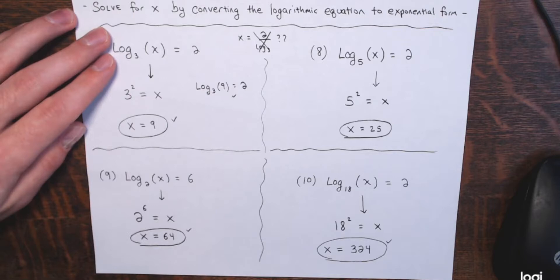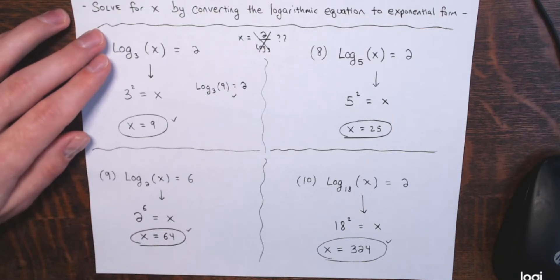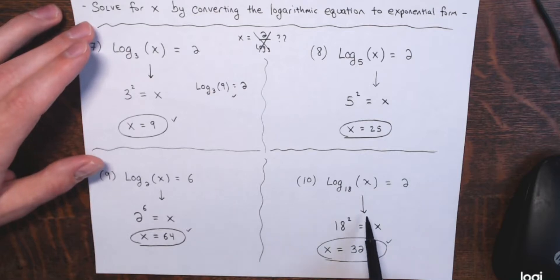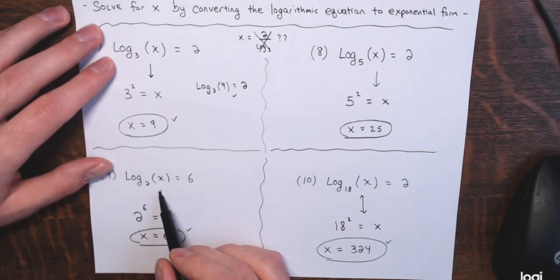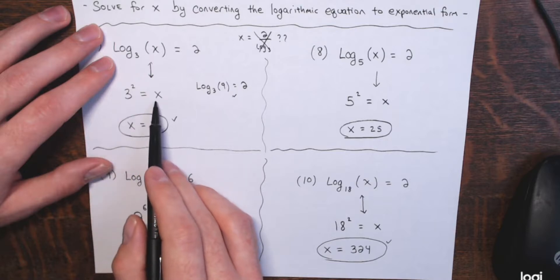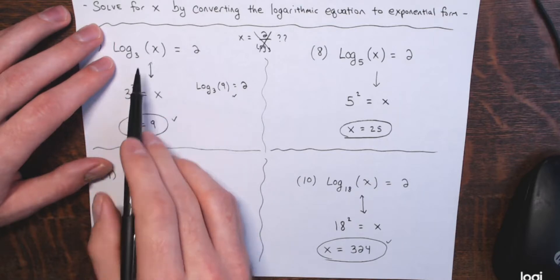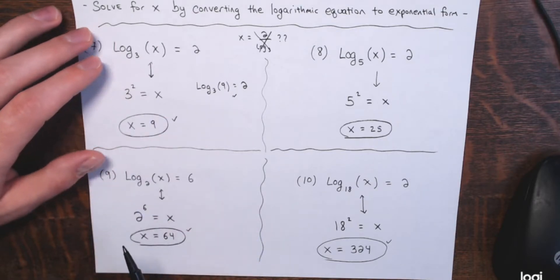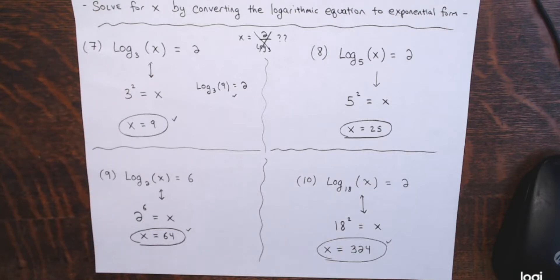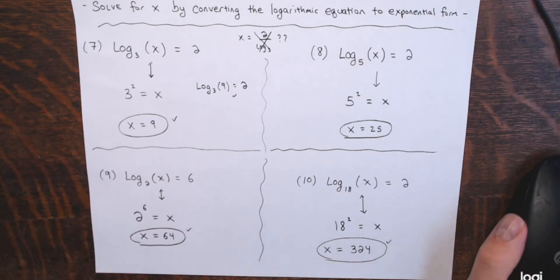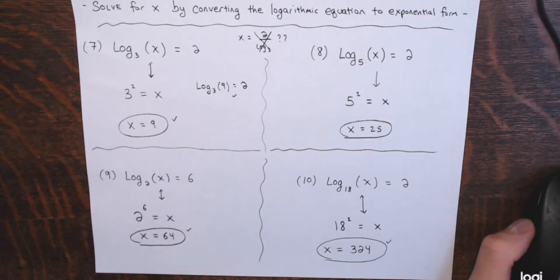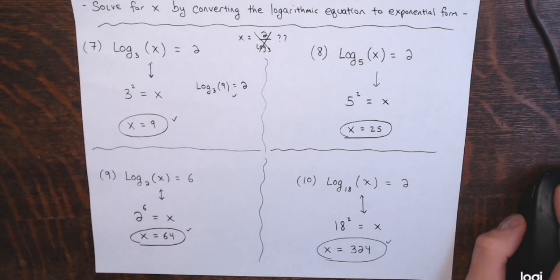I'm hoping this was easy enough. In the next video we're just going to go backwards — I'll be given a statement in exponential form and write it in logarithmic form, and that should be simple. If you know how to go from one form to the other, going backwards should be just as easy. I'm hoping that watching me go over these 10 examples helps you out when you're converting from logarithmic form to exponential form on your own. Thank you very much for watching.